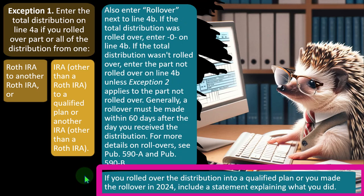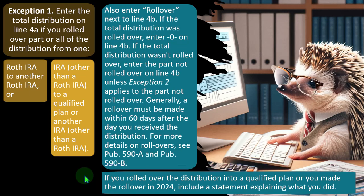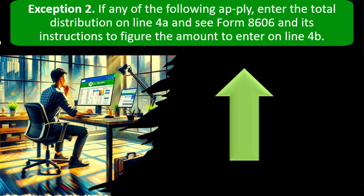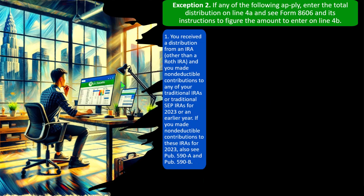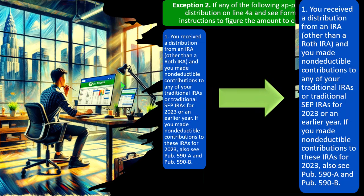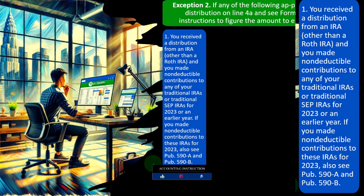If you rolled over the distribution into a qualifying plan or you need the rollover in 2024, include a statement explaining what you did. Exception two: if any of the following apply, enter the total distribution on line 4A and see Form 8606 and its instructions to figure the amount to enter on line 4B. Number one: you received a distribution from an IRA other than a Roth IRA and you made non-deductible contributions to any of your traditional IRAs or traditional SEP IRAs for 2023 or an earlier year. See Publication 590-A and 590-B.